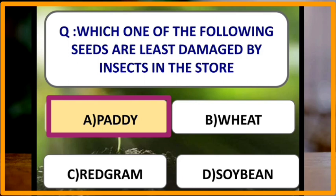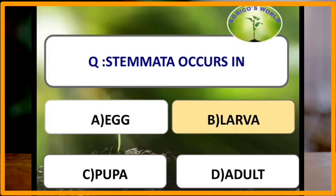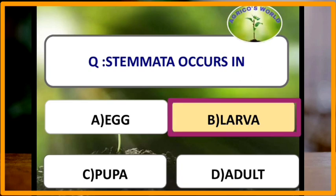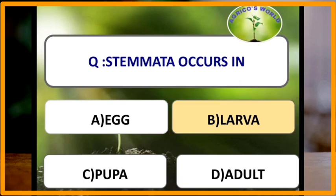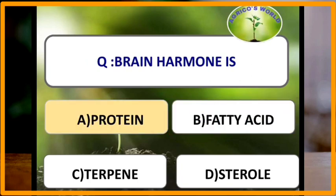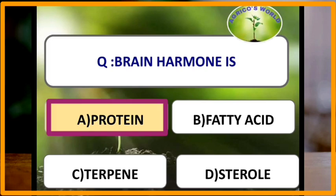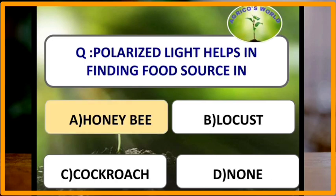Seeds that are least damaged by insects in storage are paddy. Stemmata occur in the larval stage. Brain hormone is a protein. Polarised light helps in finding the food source in honeybees.